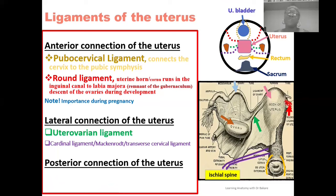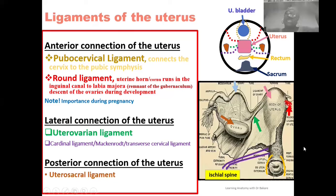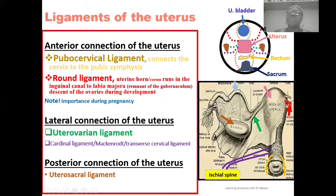For posterior support, we have the uterosacral ligament, which connects the posterior region of the cervix to the base of the sacrum. Since this is a posterior structure it cannot be shown in the anterior view lower image, but the upper image shows the uterosacral ligament creating posterior support for the uterus. So we have ligaments in the anterior group, the lateral group, and the posterior group.